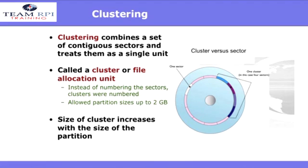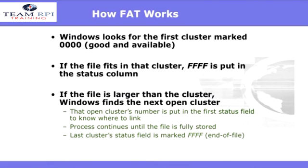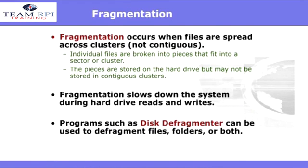The size of the cluster increases with the size of the partition. Basically, Windows looks for the first cluster marked 0000 — good and available. If the file fits in the cluster, FFFF is put in the status column. If the file is larger than the cluster, Windows finds the next open cluster. However, all this moving around can cause what we call fragmentation. Fragmentation occurs when files are spread across clusters in a non-contiguous manner, causing the system to operate very slow and sluggish because the read-write heads are having to jump all around looking for the proper data. Programs such as the disk defragmenter are used to defragment the files and folders and put them back in a continuous manner.